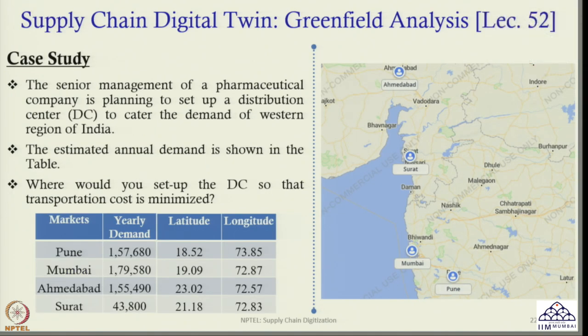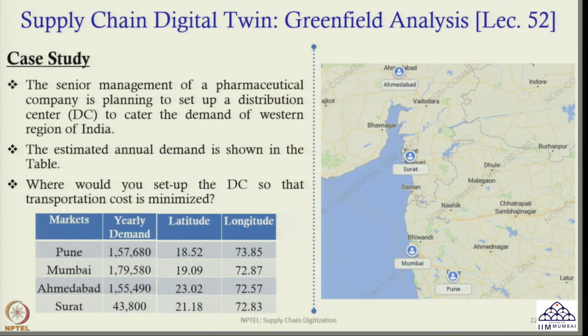Let us relook at the case study which we discussed in the last class. The senior management of a pharmaceutical company is planning to set up a distribution center to cater to the demand of the western region of India. We have four markets in the western region: Pune, Mumbai, Ahmedabad and Surat. We have their yearly demand and the exact location of each market — that is, latitude and longitude of each of these four places.